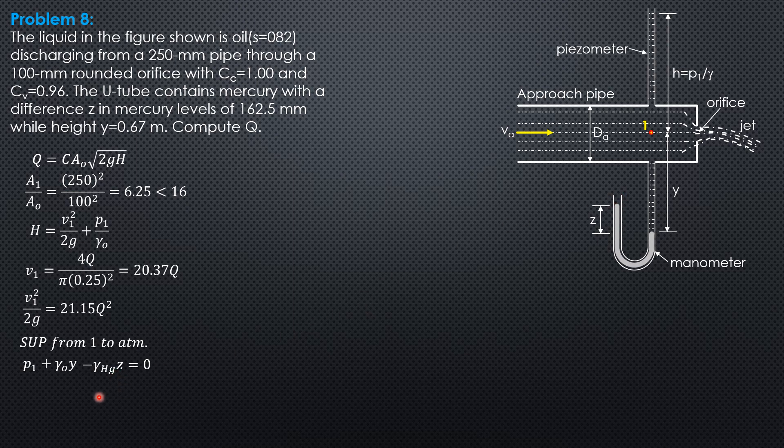So P_1 is γ_mercury × z minus γ_oil × y. Dividing everything by specific weight of oil, P_1/γ_oil, or pressure head at point 1, is γ_mercury/γ_oil times z minus y.